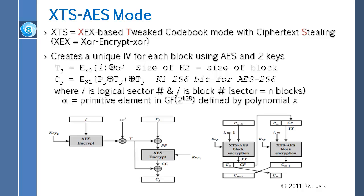Remember there are two sizes. When we talked about AES, we had AES-128, AES-256, AES-192. Those three numbers represented the size of the key; the size of the block in every case was 128 bits. So whatever is the size of the block is the size of K2. There are two keys: K2 and K1. K1 is your AES key and would be 192, 128, or 256 bits long. K2 is just used for this tweaking.